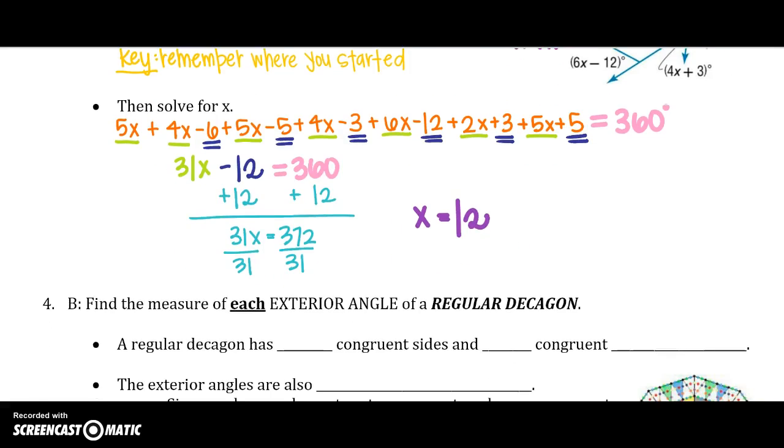We need to find the measure of each – oh no, there is that word again – each meaning 1, 1 exterior angle of a regular decagon. In decagon, we can remember that n, the number of sides, and a decagon equals 10. So, just as a reminder, a regular decagon has 10 congruent sides and 10 congruent angles as well.